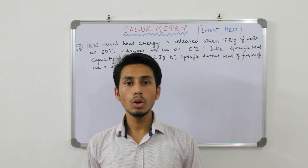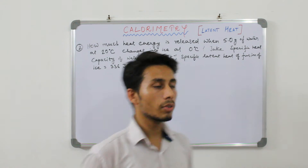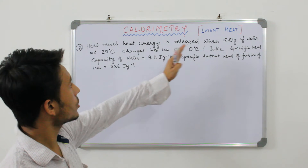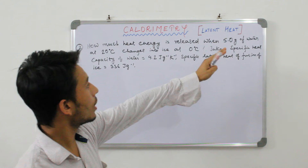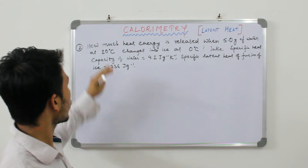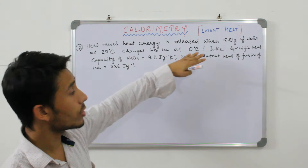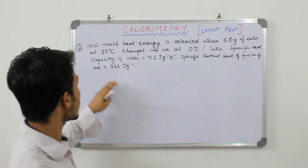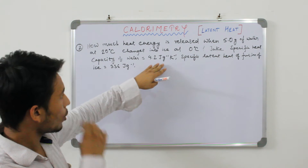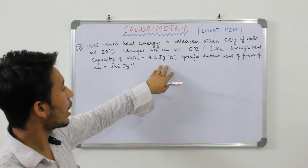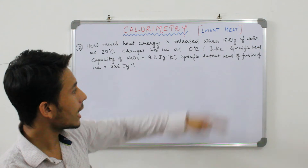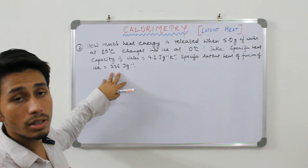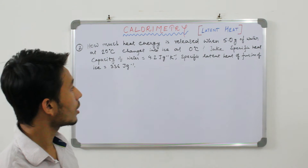We move on to question number 2: how much heat energy is released when 5 grams of water at 20 degrees centigrade changes into ice at 0 degrees centigrade? Specific heat capacity of water is 4.2 joule per gram per kelvin, and specific latent heat of fusion is 336 joule per gram.